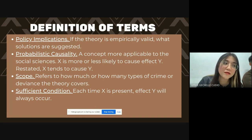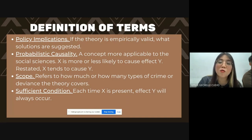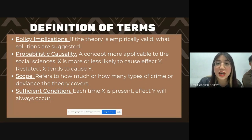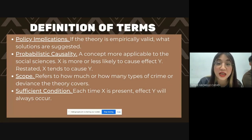And then, we have scope. This refers to how much or how many types of crime or deviance the theory covers — yung mga bagay na nasasakop ng isang theory.